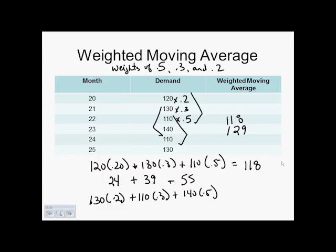Time periods 22, 110, I'm going to multiply by 0.2. The 140, in time period 23, I'm going to multiply by 0.3. And the 110, in time period 24, I'm going to multiply by 0.5. And after doing that, you should, adding those all together, you should end up with 119.